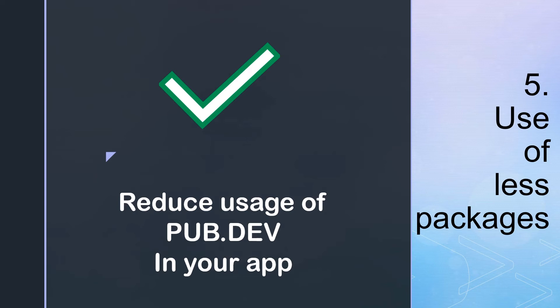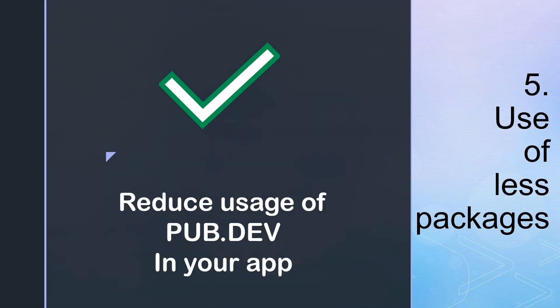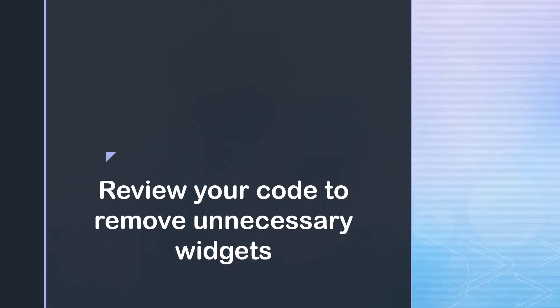Use fewer packages. We all love using packages in Flutter, especially beginners — it gets the job done. However, packages also come with a lot of files and assets that increase your memory usage. Packages should be used only for things that are very necessary, such as animations or shared preferences — things you can't easily make yourself. For things like a good-looking button or app bar, packages should be avoided.